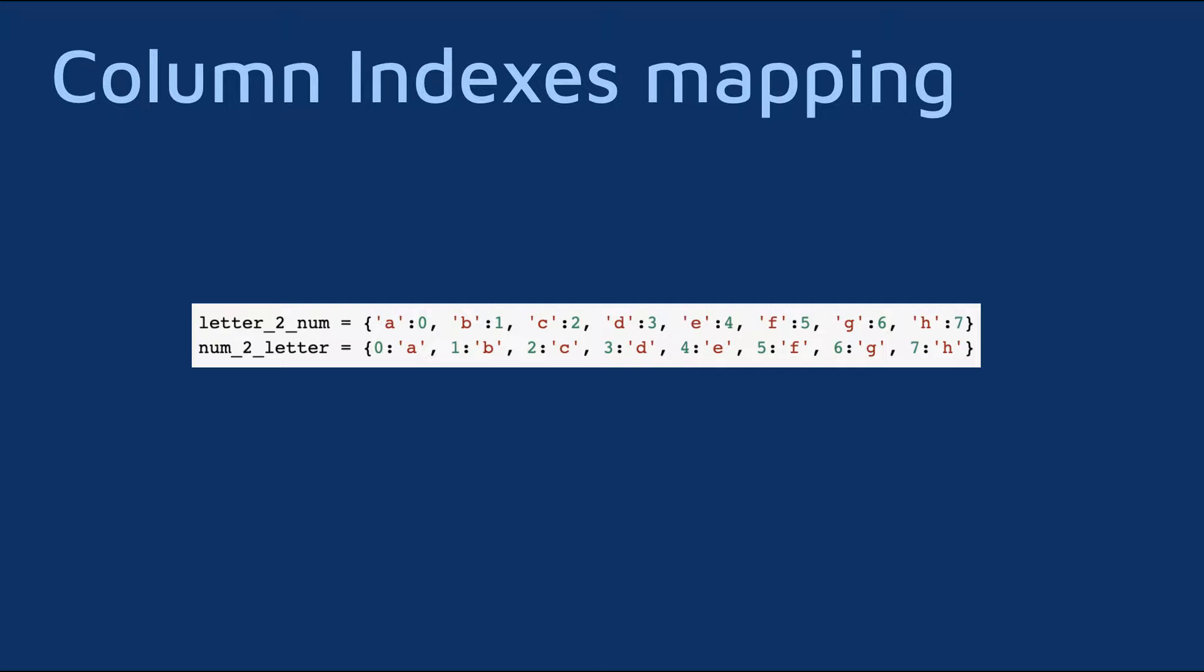First, we need to take care of a small problem. The columns of a chess board are notated with letters, while the columns of a matrix are notated with numbers. To handle this, we're going to create two dictionaries. One to convert from chess board columns to matrix columns, and another to do the opposite. This will allow us to easily move between the two representations as needed.